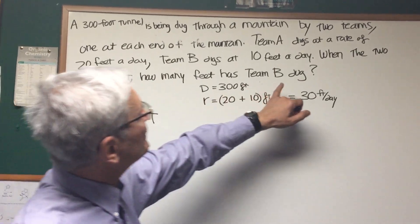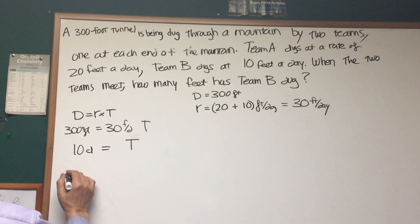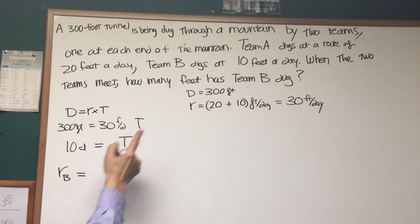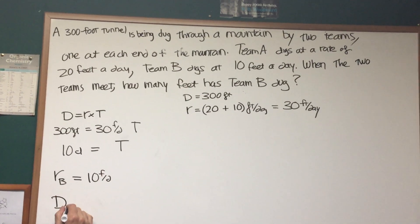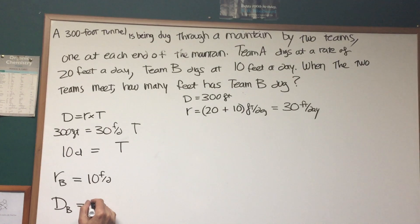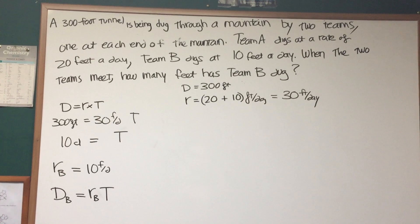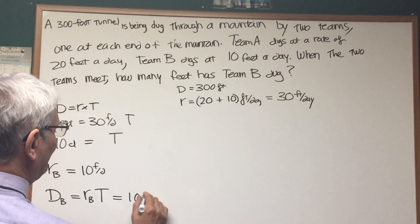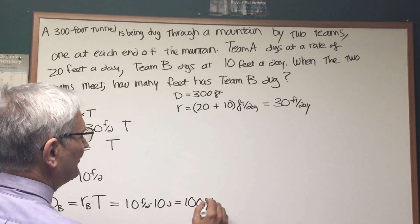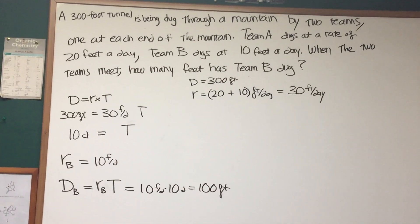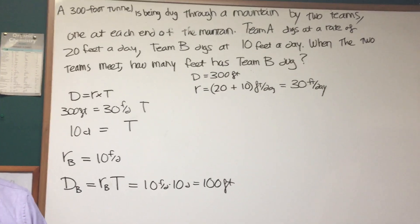So the question is: how many feet has Team B dug? Team B's rate is 10 feet a day. So the distance for Team B is going to be the rate of Team B times the total time — 10 days. This is going to be equal to 10 feet a day times 10 days, and that's equal to 100 feet. All you have to do is recognize that you have to add those two rates in order to get the combined rate of the two teams.